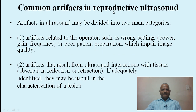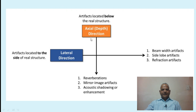Common artifacts in reproductive ultrasound can be divided into two main categories: artifacts related to the operator, such as wrong settings of power, gain, or frequency, or poor patient preparation which impairs image quality; and artifacts that derive from ultrasound interactions with tissues — absorption, reflection, or refraction — which, if adequately identified, may be useful in characterizing a lesion. These include reverberations, mirror image artifacts, acoustic shadowing, acoustic enhancement, lateral direction beam width artifacts, side-lobe artifacts, and refraction artifacts.